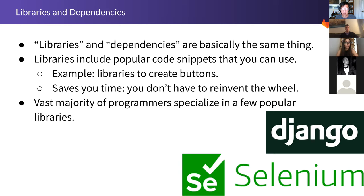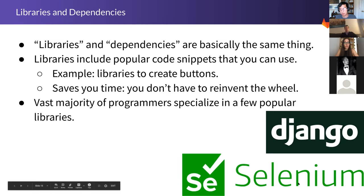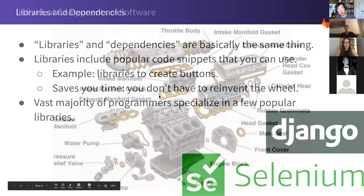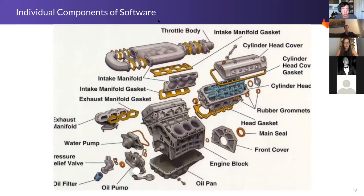A library or dependency is a templated chunk of code you can use so you don't have to copy and paste those 100 lines over and over. There are libraries for creating buttons, libraries for creating charts. The point is someone's already invented the ability to do this, so instead of building it yourself, just use someone else's library. The vast majority of programmers specialize in just a few popular libraries. When I was an engineer, our website used Django — used to create APIs — and people literally had entire careers just using Django. Another library we used a lot was Selenium for web automation.